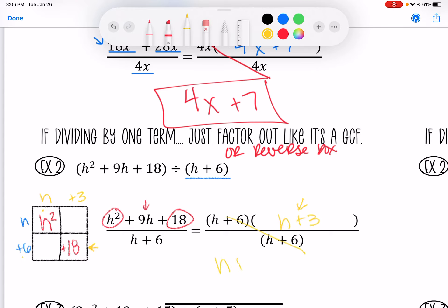So that term right here is h plus 3. And again, this one cancels out, so your answer would be h plus 3. That's how easy it is with the reverse box method. And you're like, what? Why haven't you shown us this?